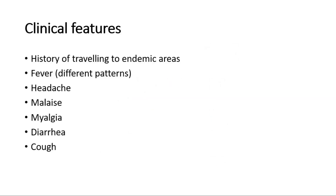For clinical features, we must consider malaria in any patient with fever who has previously visited a malaria-endemic area. We should ask whether they have a history of travelling, especially to endemic areas. Patients usually present with fever, where different Plasmodium species produce different patterns — for example, alternate-day fever for falciparum, vivax, and ovale, whereas Plasmodium malariae causes fever every third day. However, most patients have no specific fever pattern. Other clinical features include headache, malaise, myalgia, diarrhea, and cough — all non-specific, general symptoms.